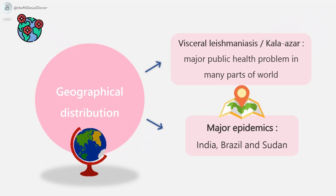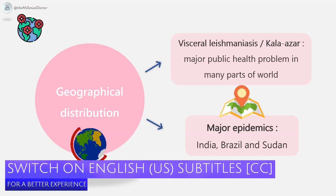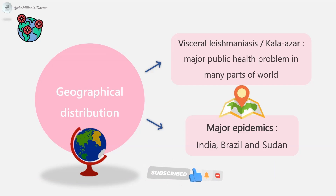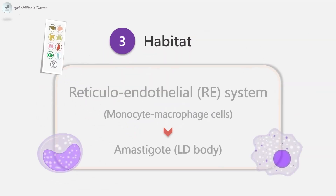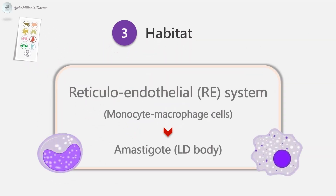Epidemiology: Visceral leishmaniasis or Kala azar is a major public health problem worldwide. According to the WHO, a total of five lakh cases occur every year, of which 90% are found in the Indian subcontinent, Sudan, and Brazil. The disease occurs in endemic, epidemic, or sporadic forms. Major epidemics are currently found in India, Brazil, and Sudan.